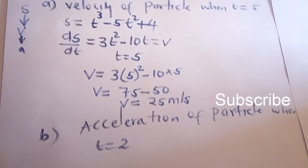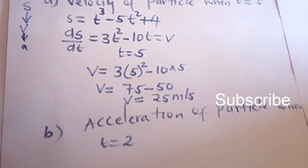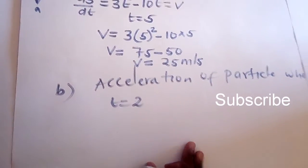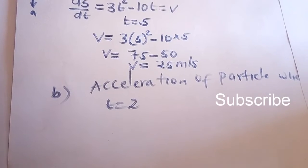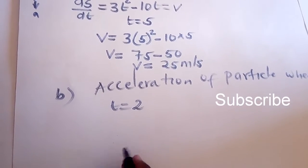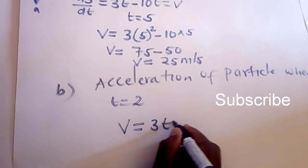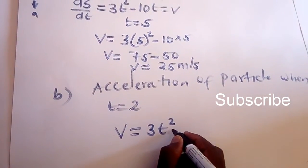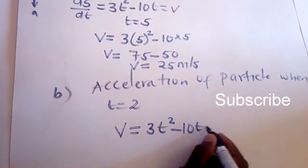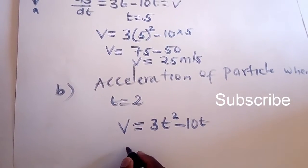Now we can also get acceleration using the concept of differentiation. As we said earlier, for us to get acceleration we differentiate velocity. Because we know that our velocity is 3t squared minus 10t, for us to get acceleration it's dv/dt.